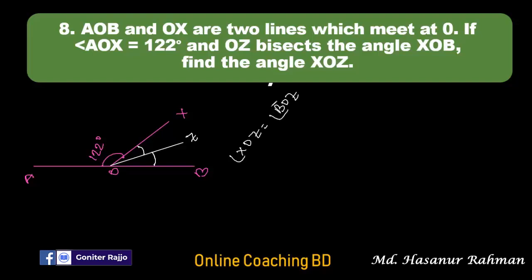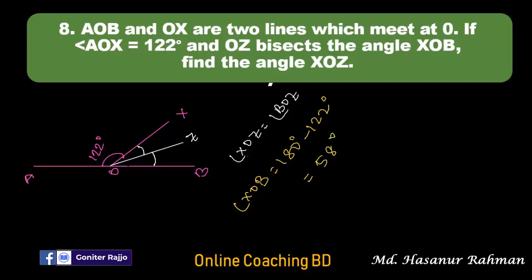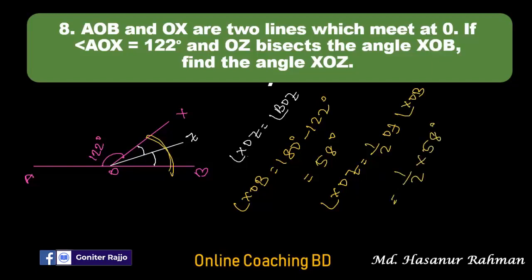We need to find angle XOZ. First we find angle XOB: since AOX and XOB are supplementary, angle XOB equals 180 degrees minus 122 degrees, which is 58 degrees. Since XOZ and ZOB are equal, angle XOZ equals half of angle XOB, that is half of 58 degrees.